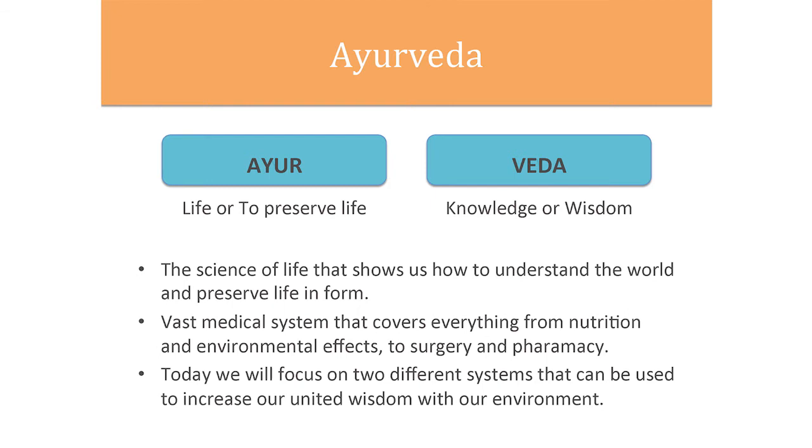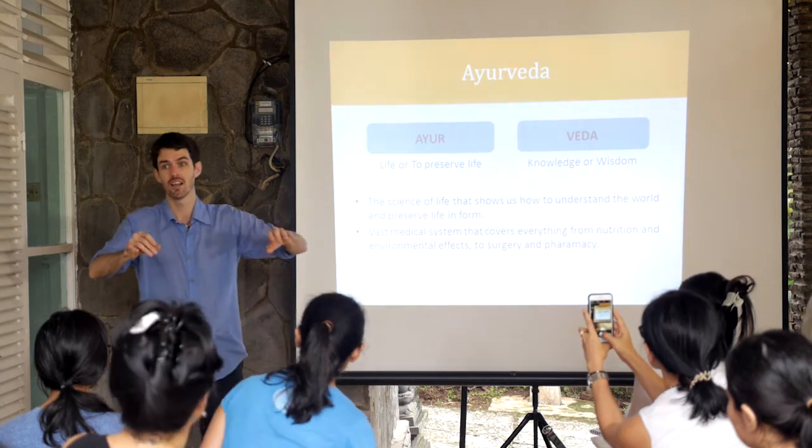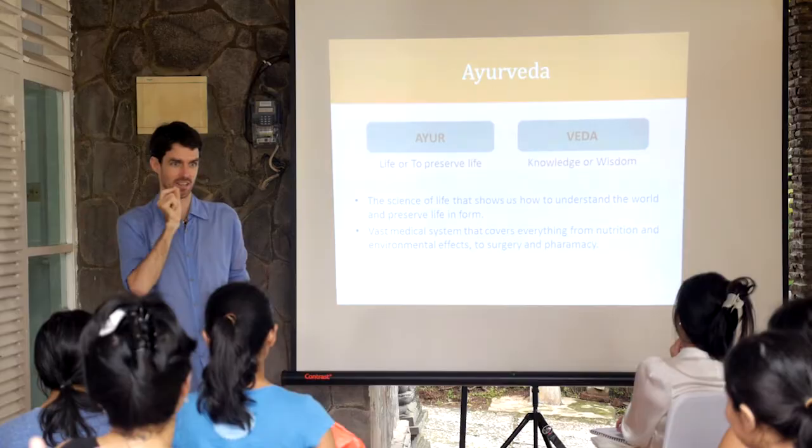Ayurveda is the science of life that shows us how to understand the world and preserve life in form. It's a vast medical system that covers everything from nutrition and environmental effects to surgery and pharmacy. A lot of people think of it as just a little bit of doshas and this and that — what we're teaching today is like kindergarten Ayurveda; it really goes very deep. They were doing organ transplant surgery 2,000 years ago, knowing the herbs to counteract the body's immune response. A lot of modern surgery practices come from Ayurveda, including cataract surgery, which we learned from ancient Ayurvedic texts. It's an amazing system of medicine.